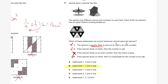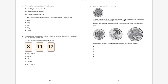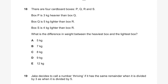Question eighteen. There are four cardboard boxes P, Q, R, and S. Box P is three kilograms heavier than box Q. Box Q is five kilograms lighter than box R. Box S is four kilograms lighter than box R. What is the difference between the heaviest and lightest box? Let box Q equal a triangle (unknown value). Then box P equals triangle plus 3; box R equals triangle plus 5; box S equals triangle plus 5 minus 4, which is triangle plus 1.